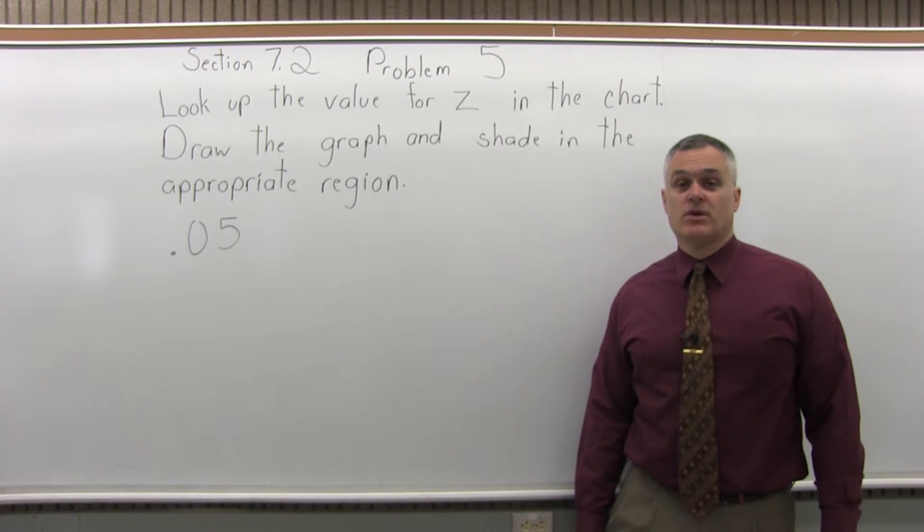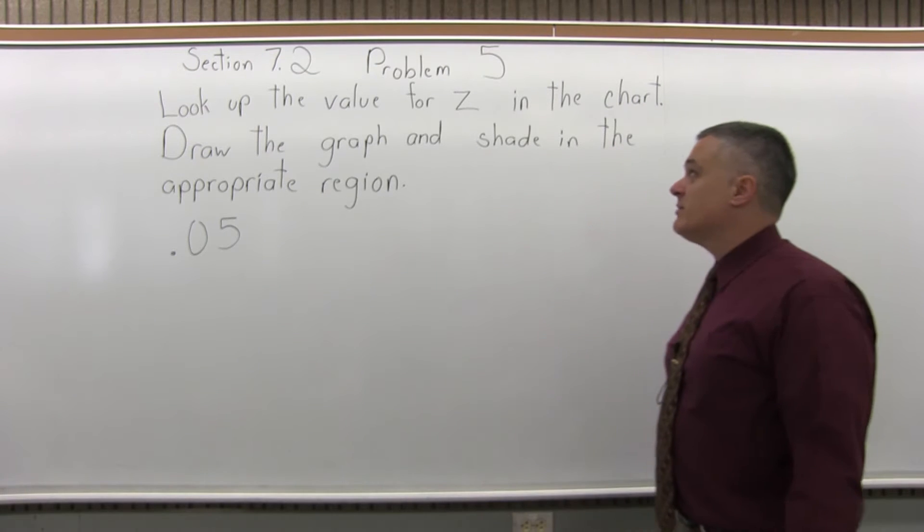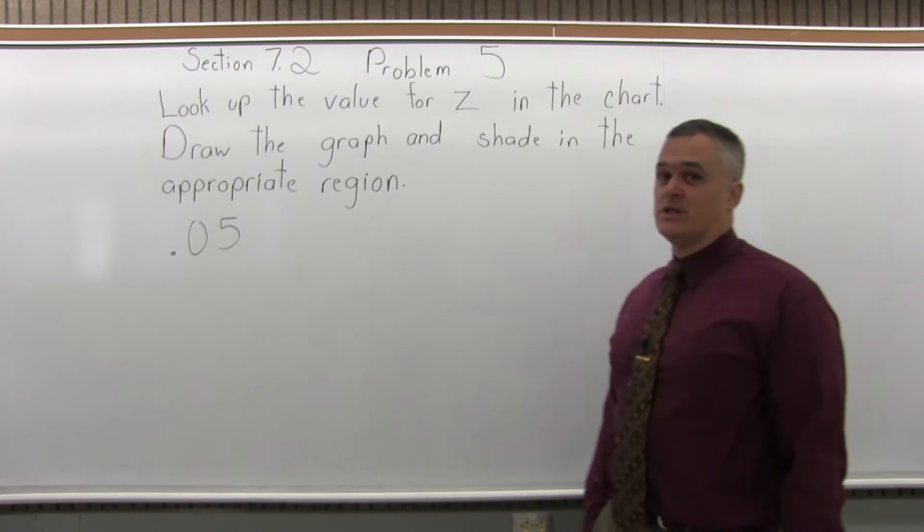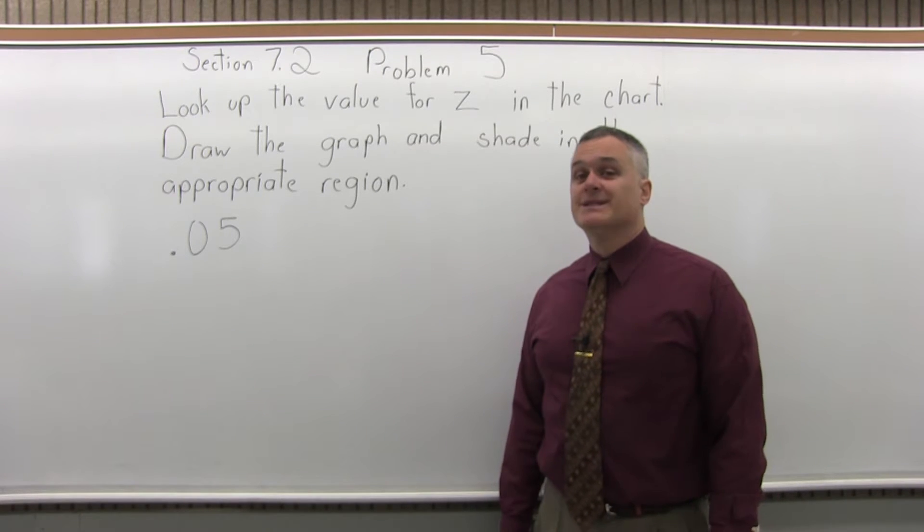This is Section 7.2, Problem number 5. It says look up the value for z in the chart, draw the graph and shade in the appropriate region and the value to look up is .05.